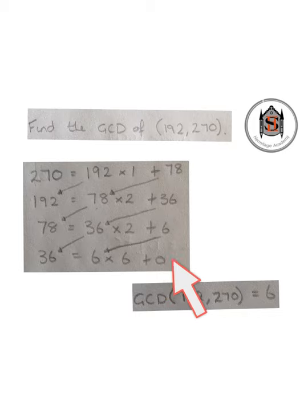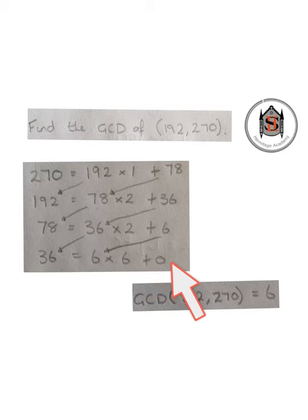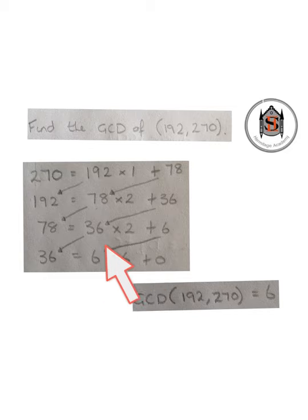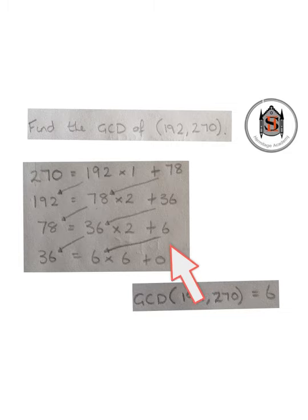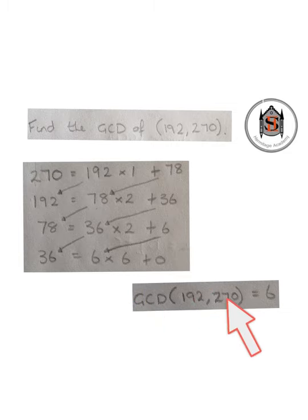Because our remainder is now 0 — this is really important — it means we can stop the process. To find our greatest common divisor we look at the number in this position here, which is also the remainder in the previous line. So our greatest common divisor of 192 and 270 is 6.